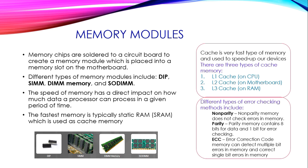The faster memory type is typically static RAM, known as SRAM, which is used as cache memory. Cache is a very fast type of memory used to speed up our devices. There are three main types of cache memory: L1 cache found on the CPU, L2 cache on the motherboard, and L3 cache on RAM.